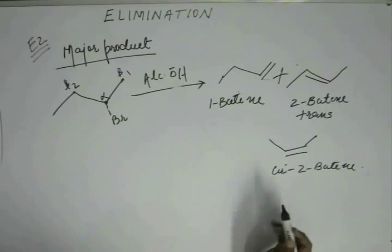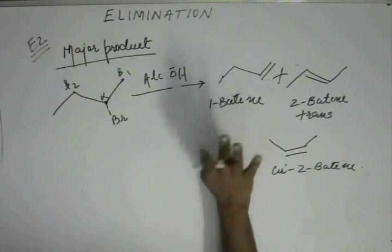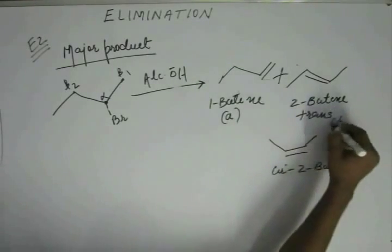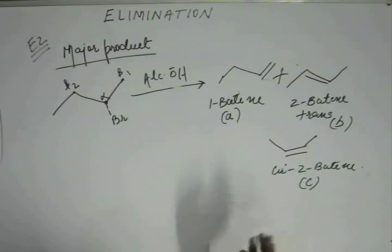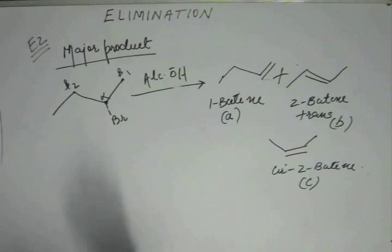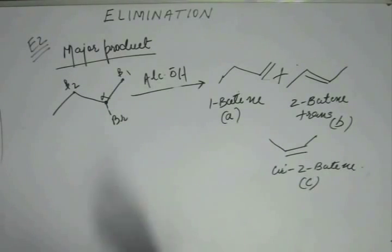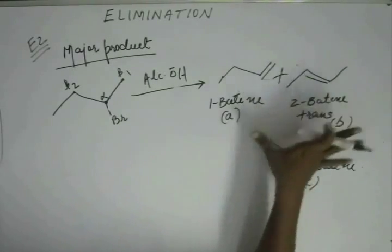So, 2-butene is more stable than 1-butene. If we call the products A, B, and C, then B and C will have greater content than A, because B and C are more stable than A. Now we have to judge between B and C. B and C have equal hyperconjugation — both have 3 + 3 = 6 alpha-hydrogens — so we must look for other factors.